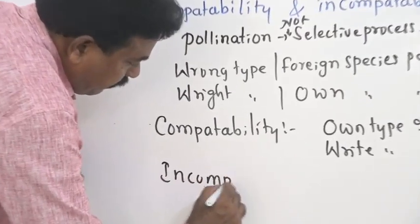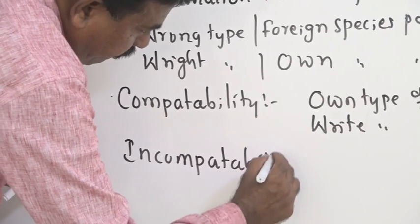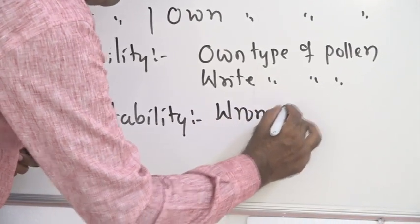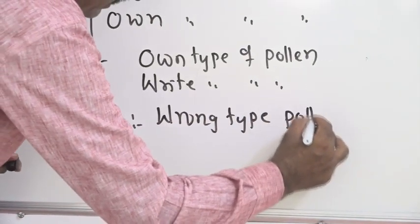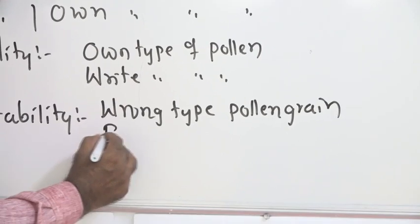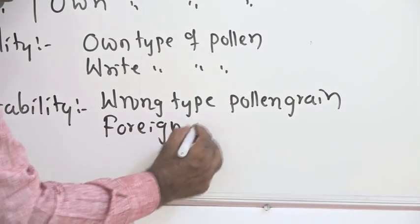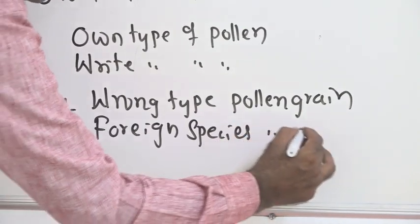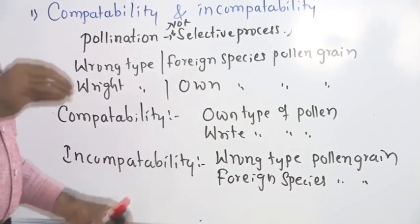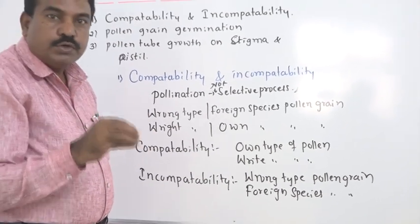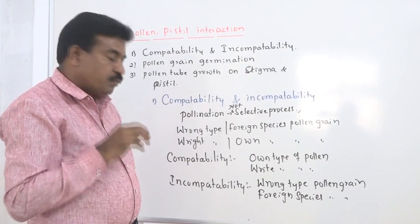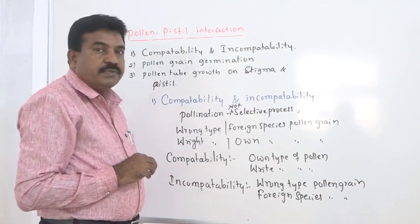In incompatibility, the wrong type of pollen grain is dusted on stigma — that is, a foreign species pollen grain. At that time, generally there is no pollen grain germination and no pollen tube growth on stigma. The pollen grain may not even reach the ovule or megasporangium. That process is called incompatibility.